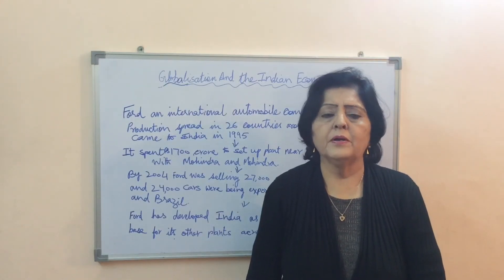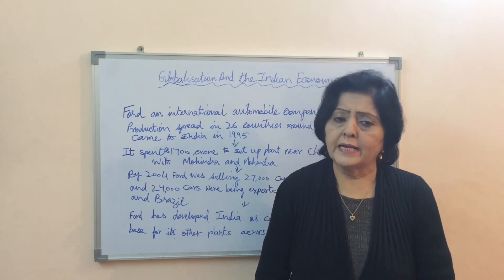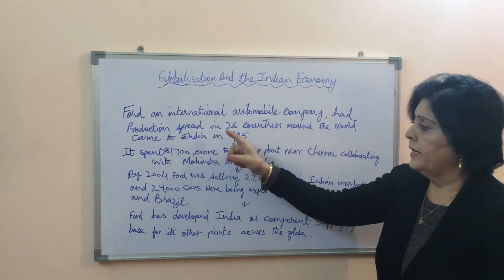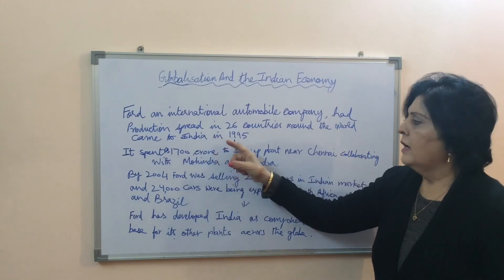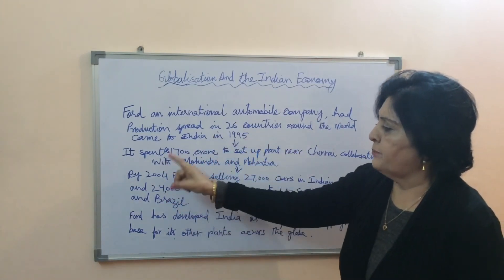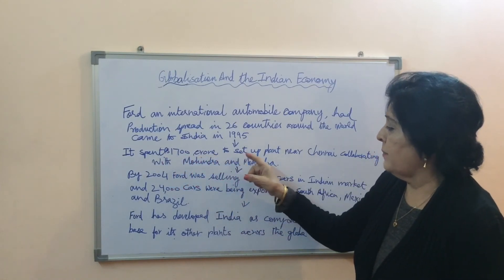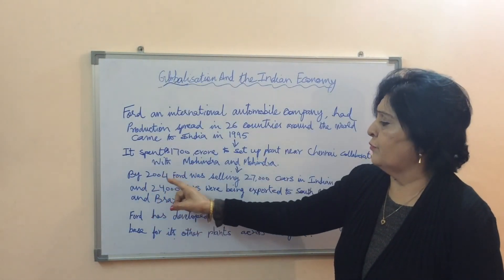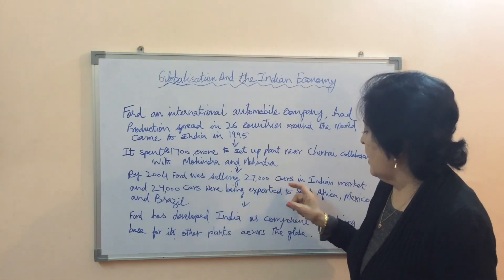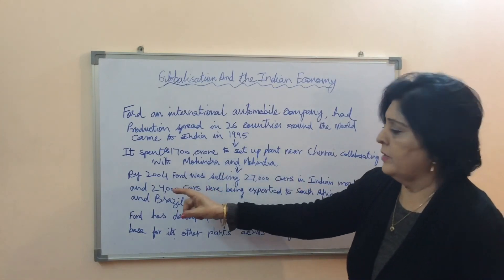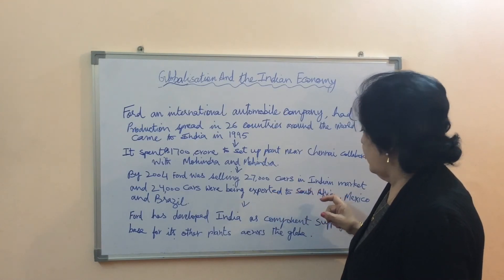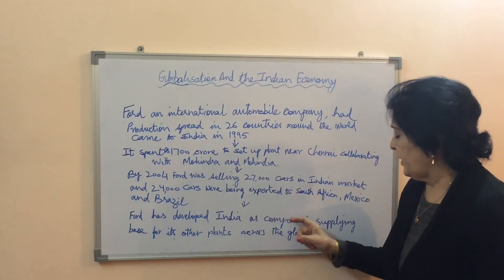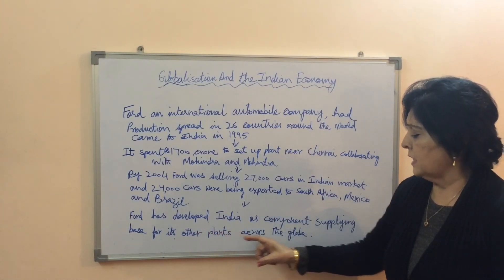We will take the example of Ford company interlinking markets at widely dispersed places. Ford, an international automobile company with production spread in 26 countries, came to India in 1995. It spent Rs. 1700 crores to set up a plant near Chennai, collaborating with Mahindra and Mahindra. By 2004, Ford was selling 27,000 cars in the Indian market and exporting 24,000 cars to South Africa, Mexico and Brazil. Ford has developed India as a common component-supplying base for its other plants across the globe.